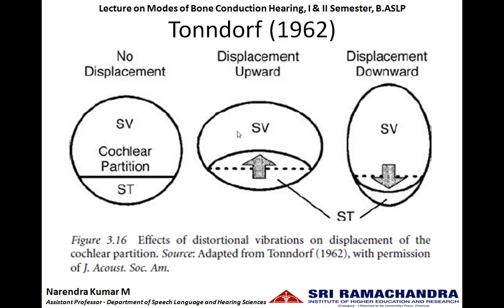In compression mode of bone conduction, greater energy is required to compress the cochlear duct, and the round window or oval window must move to displace the basilar membrane. These are the two modes of bone conduction in the inner ear: distortion mode and compression mode.